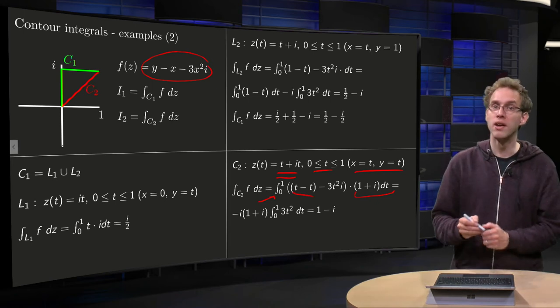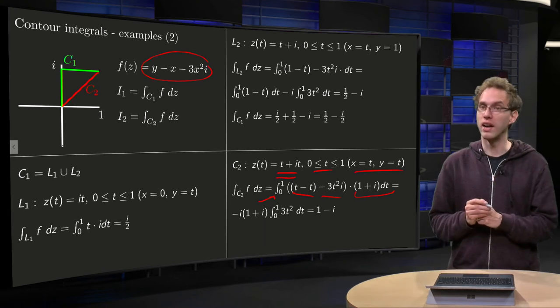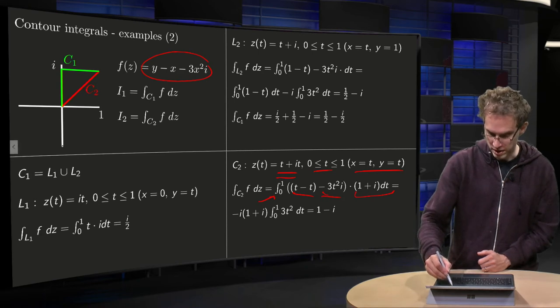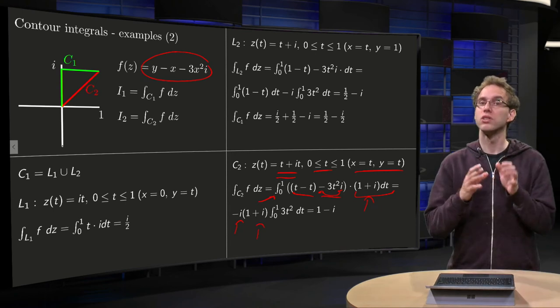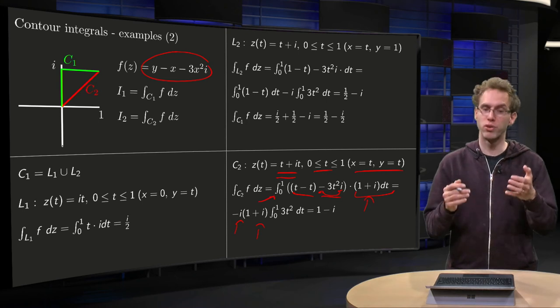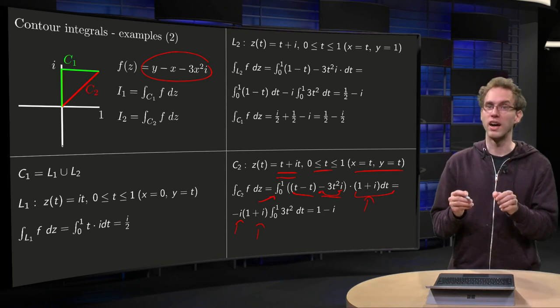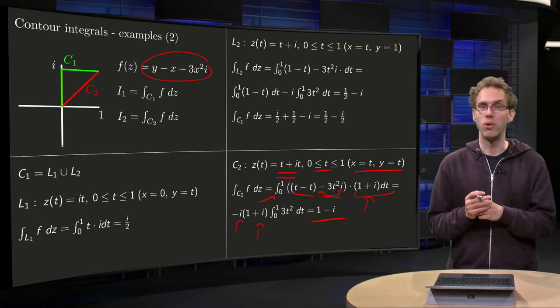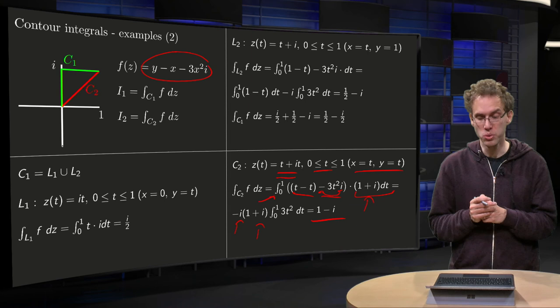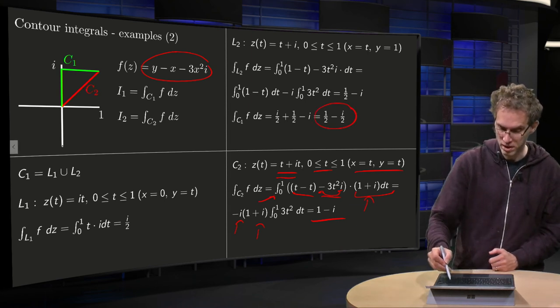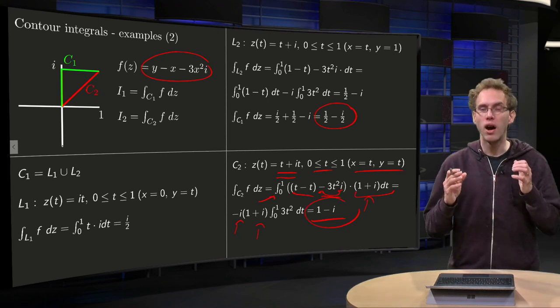It gives us t minus t minus 3t squared times i. So what do we have left? You take out the minus i over here, you take out the 1 plus i over there, and then you just have to integrate 3t squared dt. Integral t cubed between 0 and 1 gives you 1, so you're left with minus i times 1 plus i equals 1 minus i. So there you have your integral along C2, and in particular you notice that the integral along C1 and C2 are not the same.